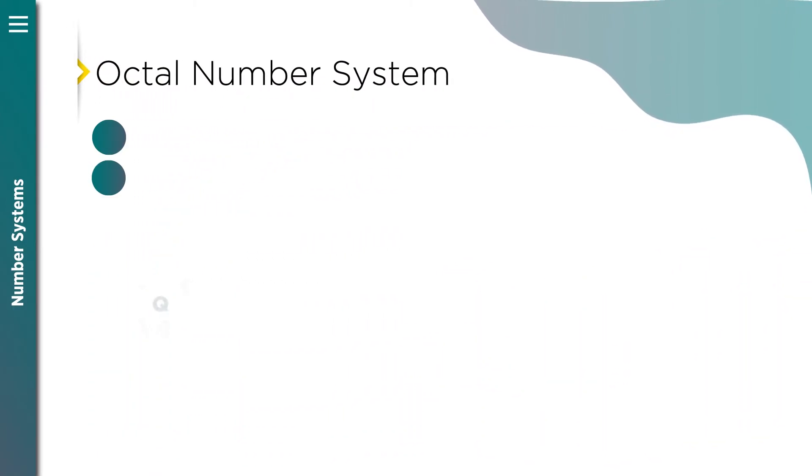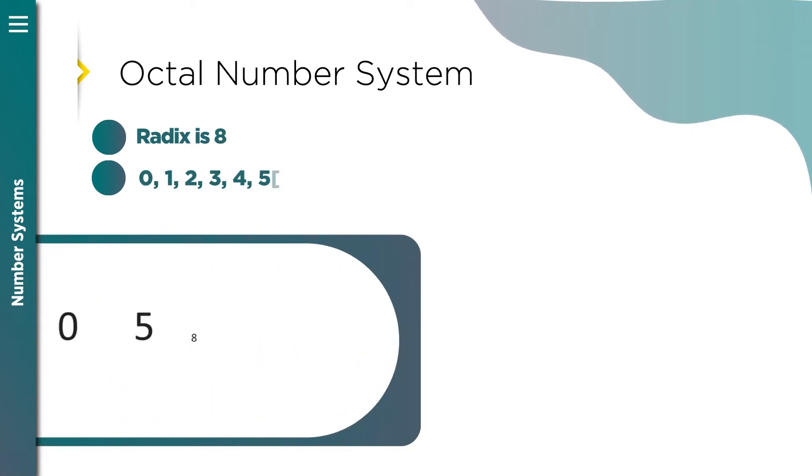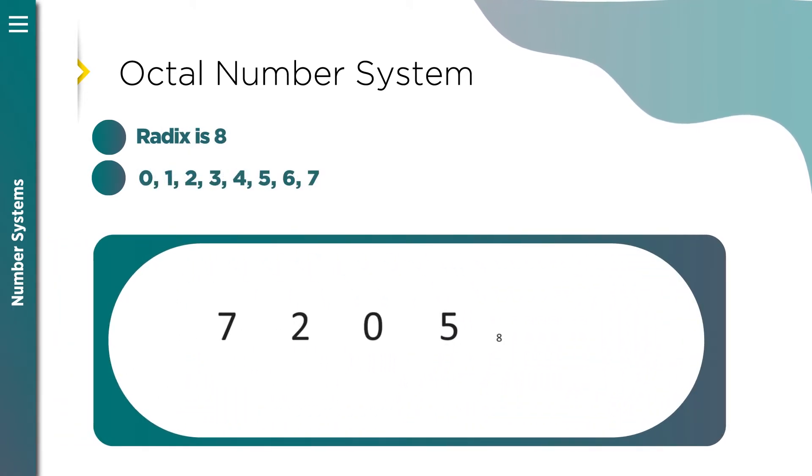Octal number system radix is 8. Notice how in each of these number systems, the number of digits contained within the system is the name of the system. Base 2 has 2 digits, base 8 has 8 digits, and so on. Just remember that each system starts counting with 0.